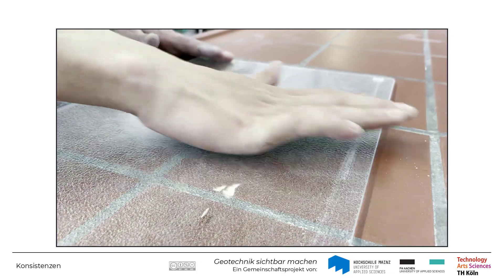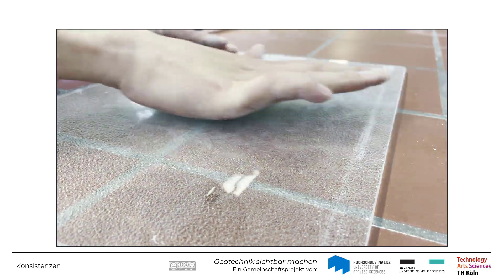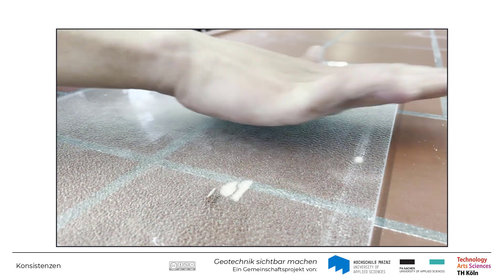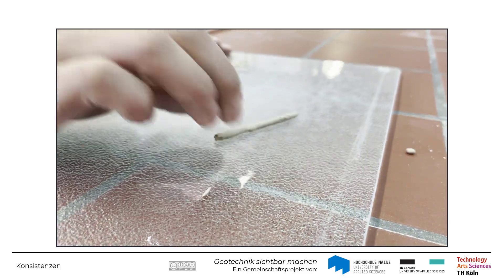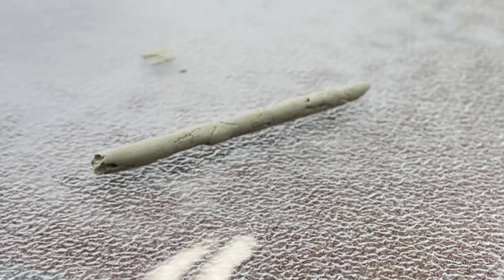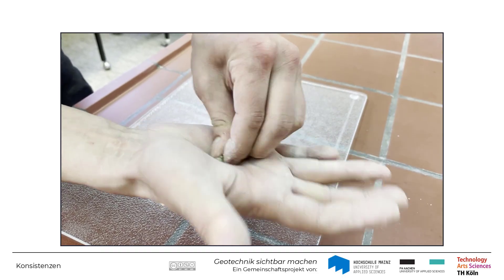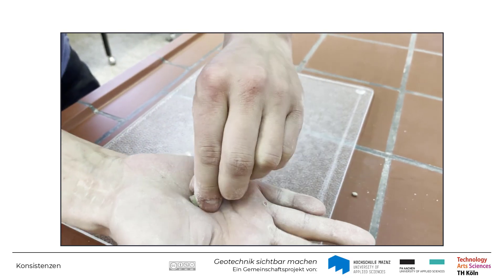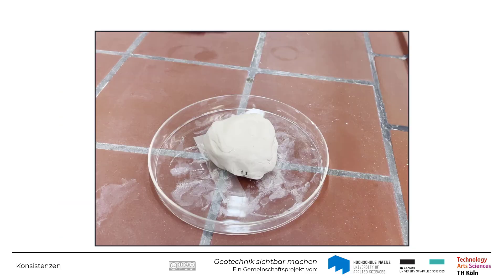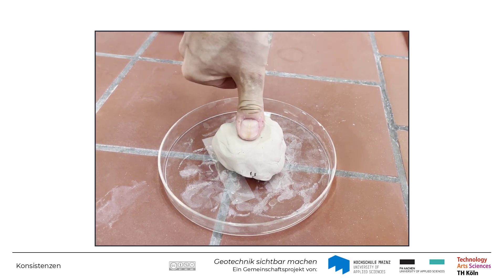Beim Versuch, den Boden zu 3 mm dicken Walzen auszurollen, bröckelt und reißt die Bodenprobe zwar, jedoch ist der Boden feucht genug, um ihn erneut zu einem Klumpen formen zu können. Der Boden kann nur gering mit dem Daumen eingedrückt werden.